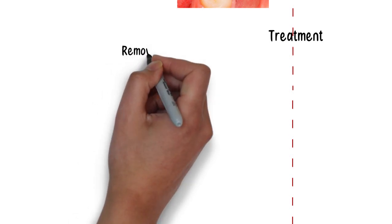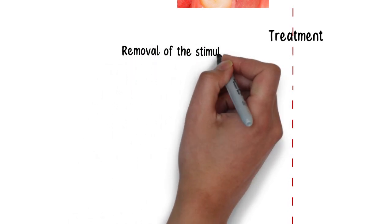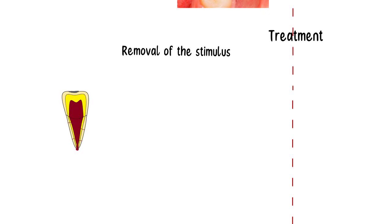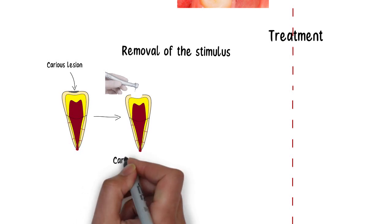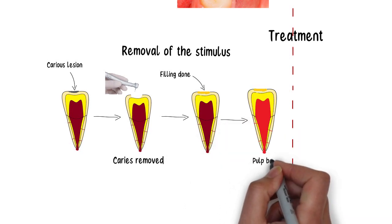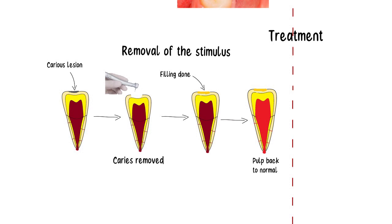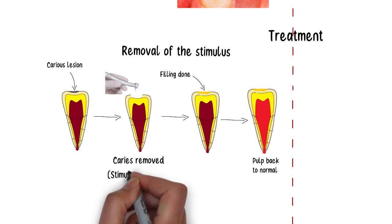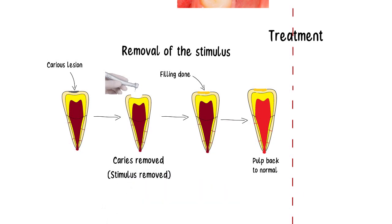The treatment of reversible pulpitis involves removal of the stimulus causing the inflammation. If caused by a small caries lesion, removal of the caries and appropriately filling the tooth with a proper insulating material on the dentine to control sensitivity will be the best suited treatment. There is no need for extensive endodontic procedures such as root canal treatment — simply removing the stimulus and filling the tooth appropriately is sufficient to resolve reversible pulpitis.